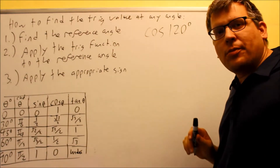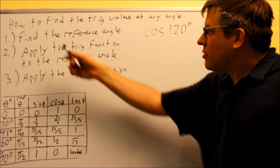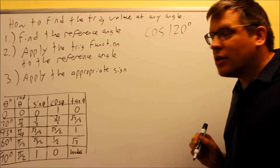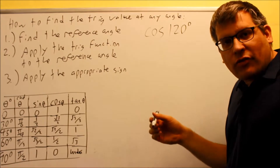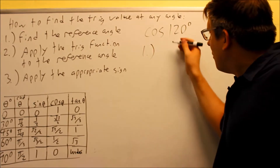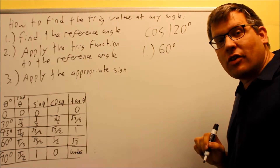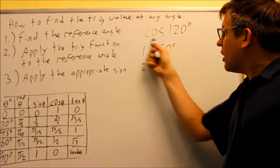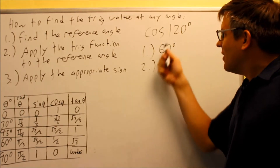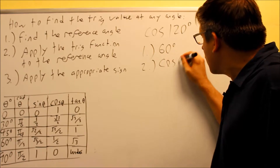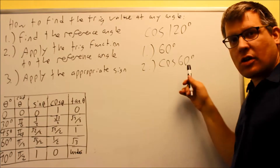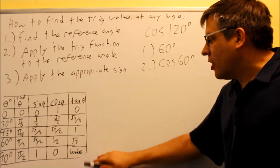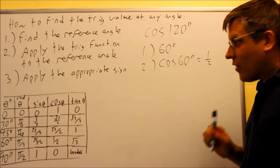Here are the three steps for finding the trig value at any particular angle. Step one: find the reference angle. For cosine 120, we found the reference angle by taking 180 minus 120, so the reference angle is 60 degrees. Step two: apply the trig function to the reference angle. The trig function is whatever one they give you in the original problem — here it's cosine. So I apply cosine to 60 degrees. Looking at 60 in the table and going over to cosine, that value is 1/2. So cosine 60 equals 1/2.